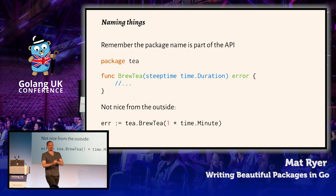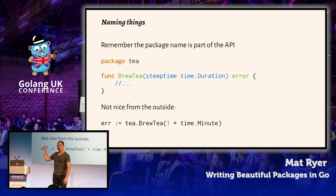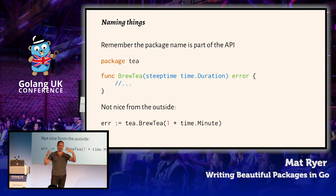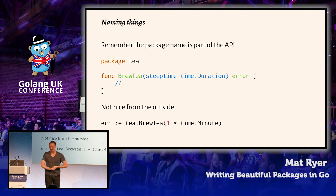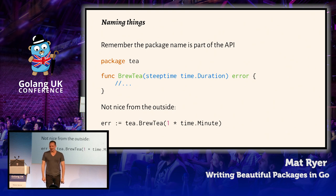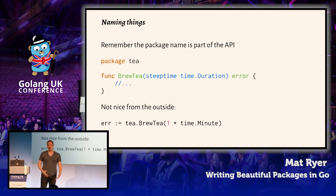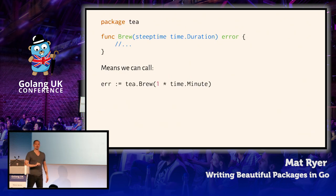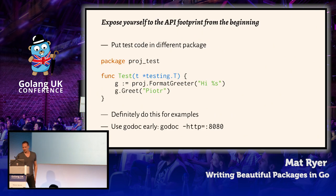From a user's point of view, remember that the package name is part of the API. Here's an example: we have a 'brewT' function — inside the package it makes sense, we're going to brew some tea, take a steep time, and return an error. But from the outside, to use that you say 't.brewT', and you get redundancy. It's enough to say 't.brew'. Think about it from the user's perspective — t.brew makes perfect sense and is much nicer.